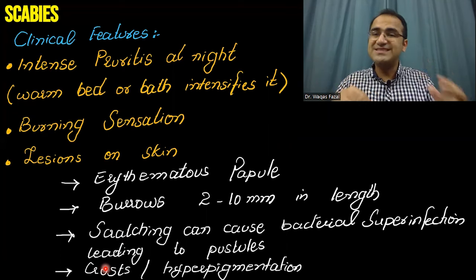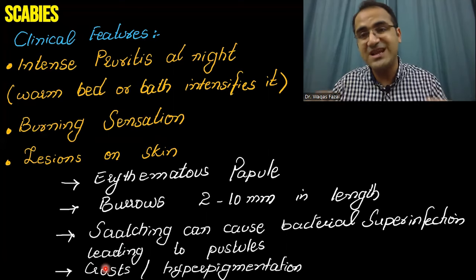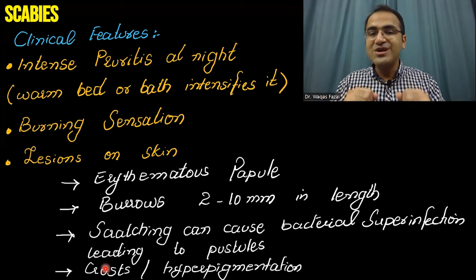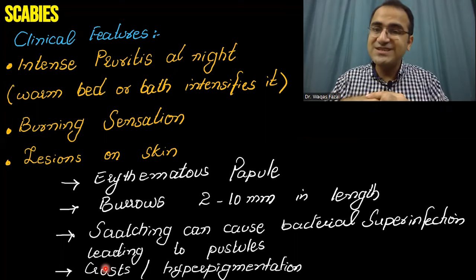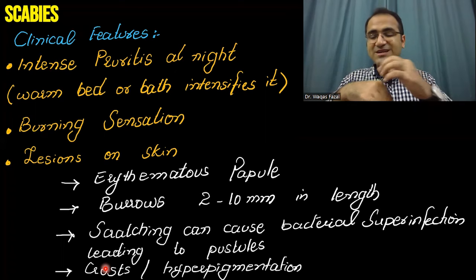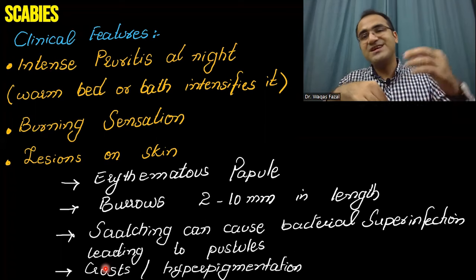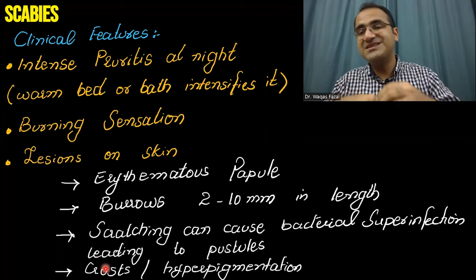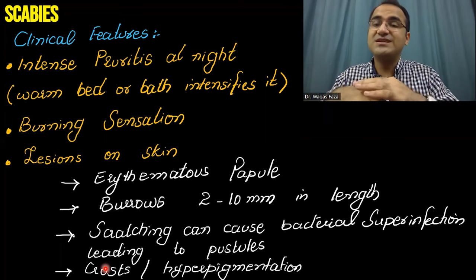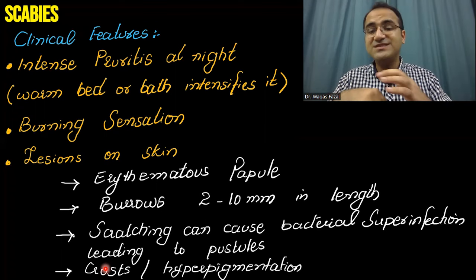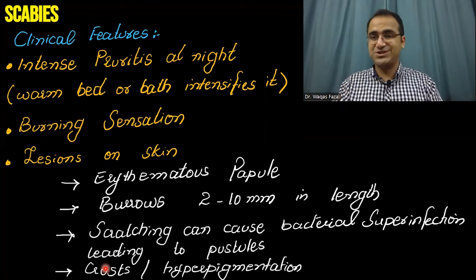To summarize the pathology sequence: the mite burrows the skin, causing itching; scratching further injures the skin; bacteria enter, causing pus formation; and later excessive healing results in the formation of crusts and hyperpigmentation.